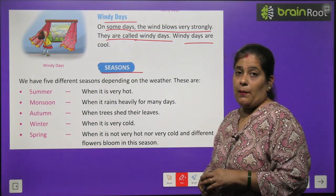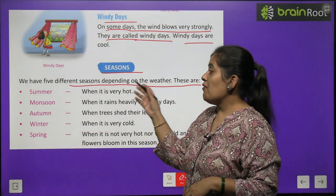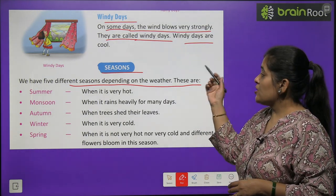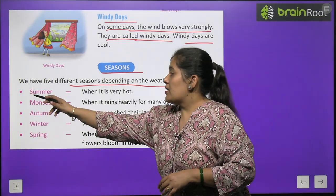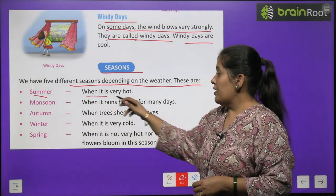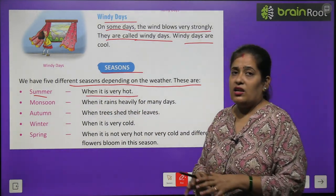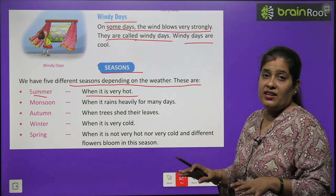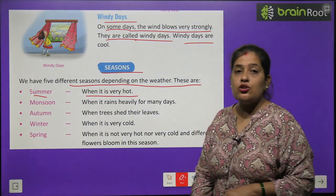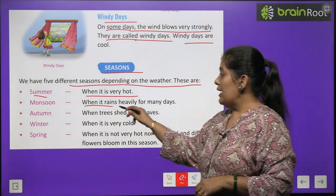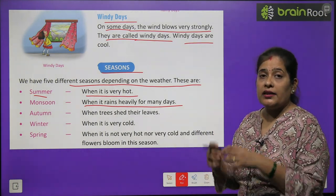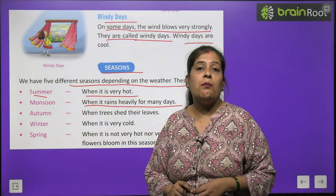Now we will learn about seasons — ab hum mausam ke bare mein padhenge. We have five different seasons — paanch alag-alag mausam hote hain, jo weather pe depend hain. Summer — ek mausam hota hai, garmion ka. When it is very hot — jab bahut garmi hoti hai. Number two: Monsoon — when it rains heavily for many days — jab bahut dinon tak lagatar tez barish ho, to hum use Monsoon kehte hain.